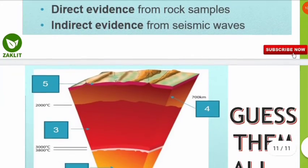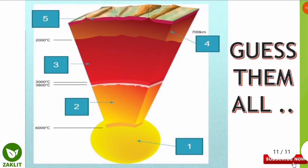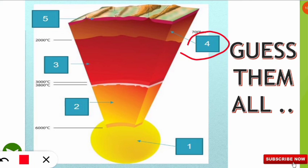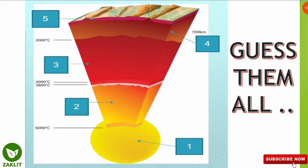Here is a task for you — you have to identify all five boxes in the diagram and tell me in the comment section whether you got them right. The hint is: the options include outer core, inner core, asthenosphere, and upper mantle. I hope you enjoyed this video. If you want more such videos, please subscribe to the channel and hit the bell icon for further updates. See you in the next video — take care and keep smiling.